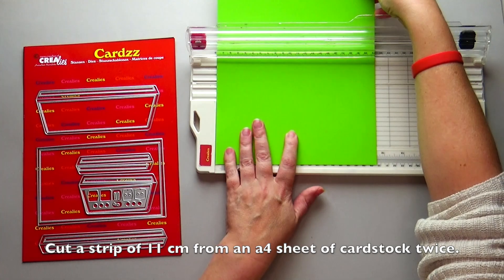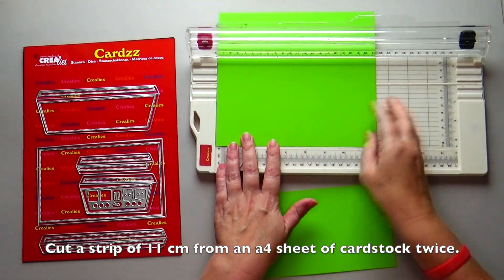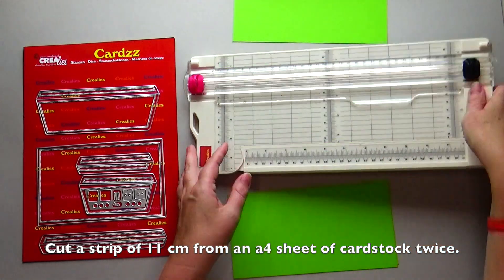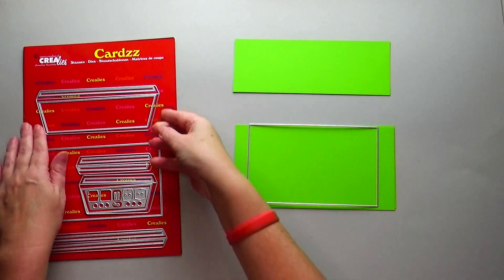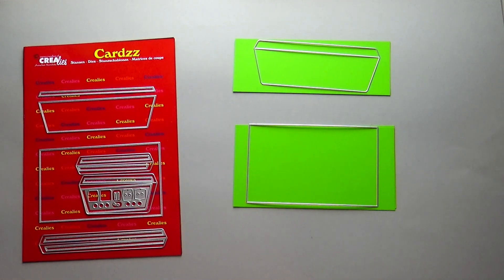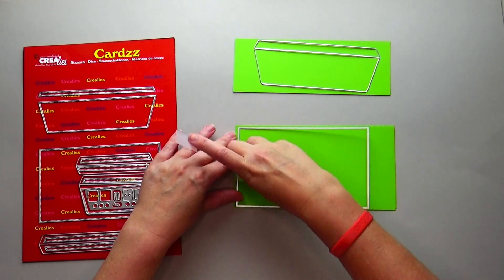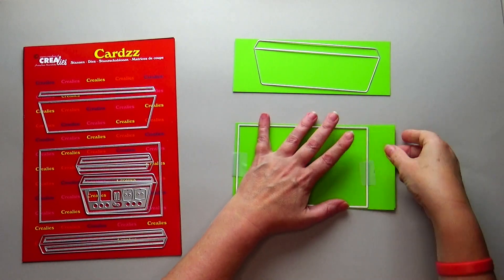Cut a strip of 11 centimeters from an A4 sheet of cardstock twice. Die cut the rectangular base die out of these strips. Die cut the base die of the flap from the remaining piece.